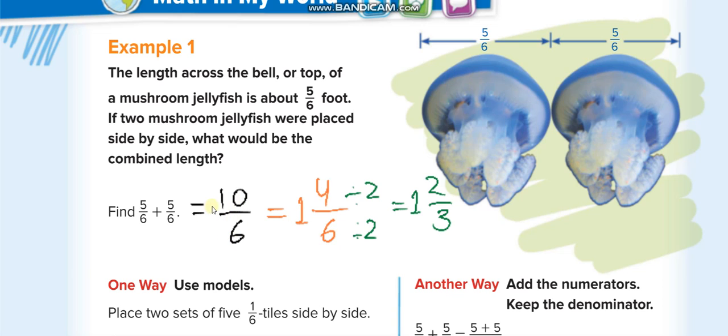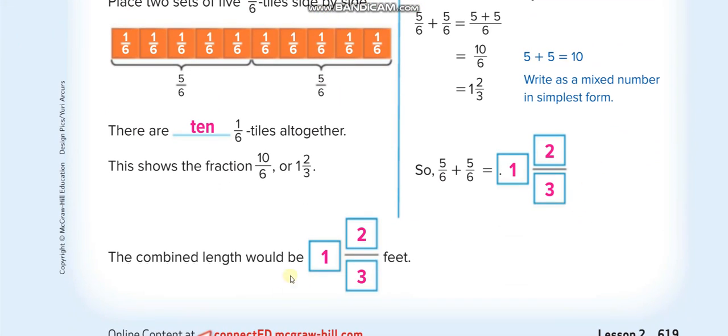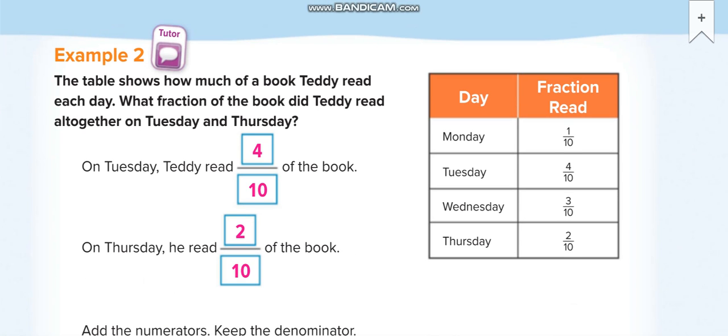It means one whole we can take out, one complete 6 from 10, so it is one whole. If you take out one 6 from 10, the remainder is 4 here in the numerator and the denominator stays the same. Then you simplify it: divide by 2 up, divide by 2 down. One whole 2 over 3, here it is one whole 2 over 3.